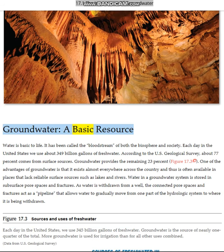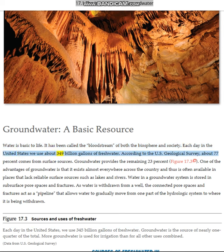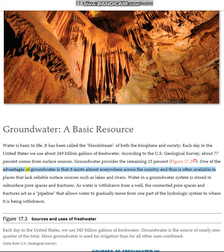Groundwater: A Basic Resource. Water is basic to life. It has been called the bloodstream of both the biosphere and society. Each day in the United States we use about 349 billion gallons of fresh water. According to the U.S. Geological Survey, about 77% comes from surface sources. Groundwater provides the remaining 23%, as shown in Figure 17.3. One of the advantages of groundwater is that it exists almost everywhere across the country and is often available in places that lack reliable surface sources such as lakes and rivers.